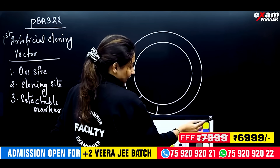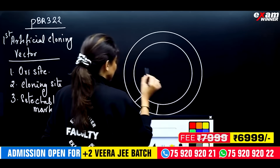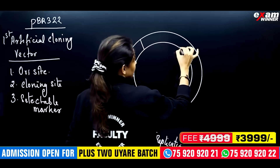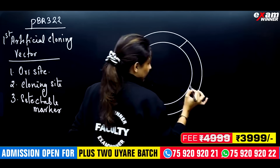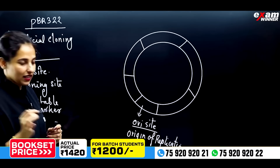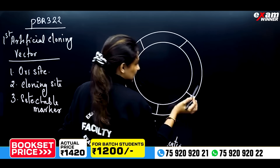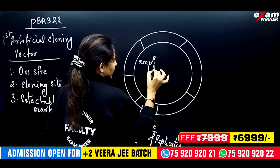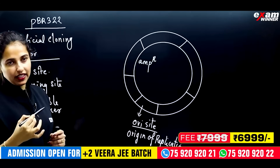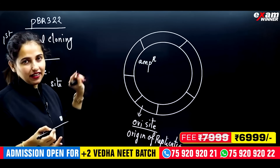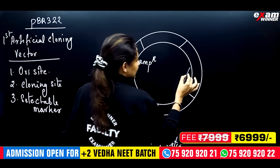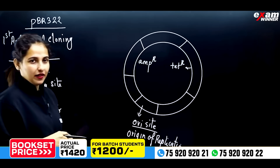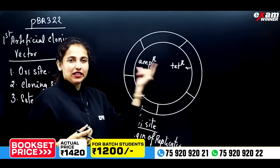Then we have the cloning site. What types are called ampicillin resistance? Ampicillin resistance is called anti-parti. What happens if you keep using anti-parti?